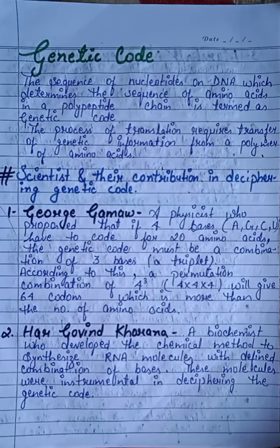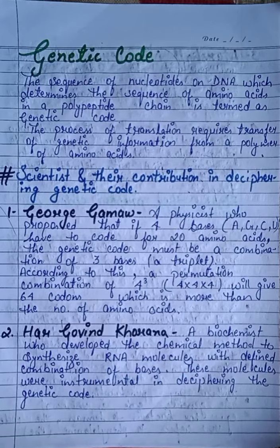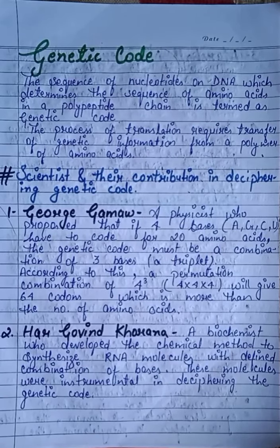The sequence of nucleotides on DNA which determines the sequence of amino acids in a polypeptide chain is termed as genetic code. The process of translation requires transfer of genetic information from a polymer of nucleotides to amino acids. In transcription, genetic information flows from DNA to mRNA. In translation, the genetic information is transferred to form a polymer of amino acids — that is, a protein.